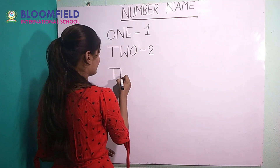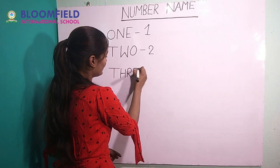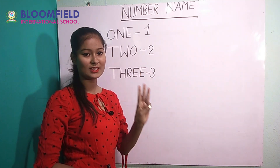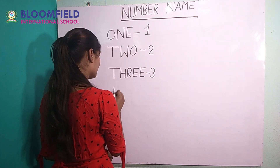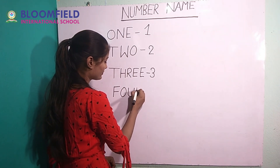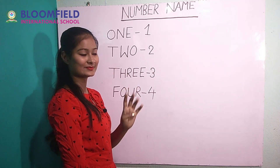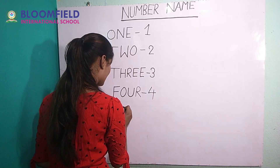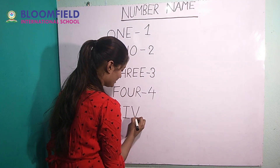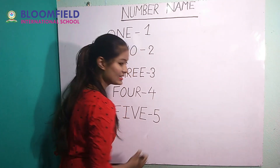T-H-R-E-E. Three. Three means teen. F-O-U-R. Four. Four means chaar. F-I-V-E. Five. Five means paanch.